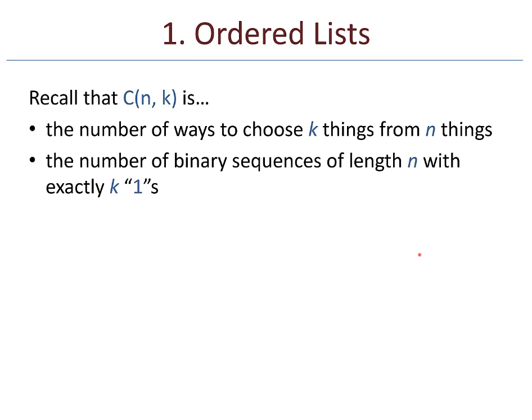So we begin with ordered lists. Recall, n choose k is the number of ways to choose k things from n things, and it is the number of binary sequences of length n with exactly k ones. It's this second interpretation that will help move us forward today.